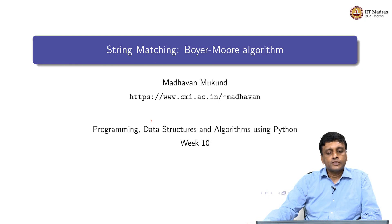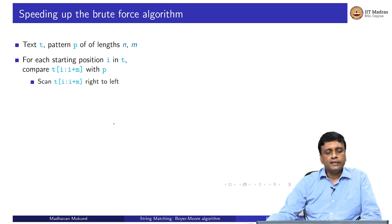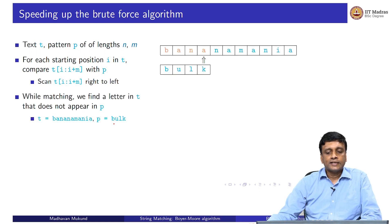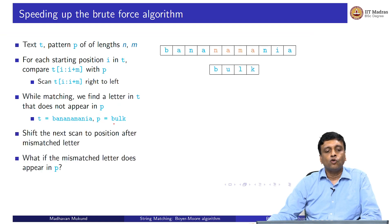Let us look at the Boyer-Moore algorithm for string matching. What we said earlier was that we can speed up the brute force algorithm, which scans each slice at a time, by checking whether there is a letter in the text which does not appear in the pattern. The example we gave was the 'A' in 'banana mania' which does not appear in 'bulk', and if we are scanning from the right, we can skip forward from position 0 to position 4 in one step.